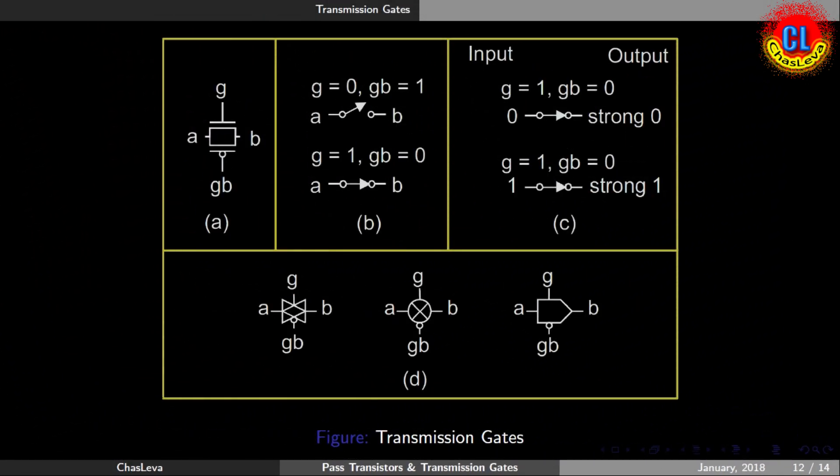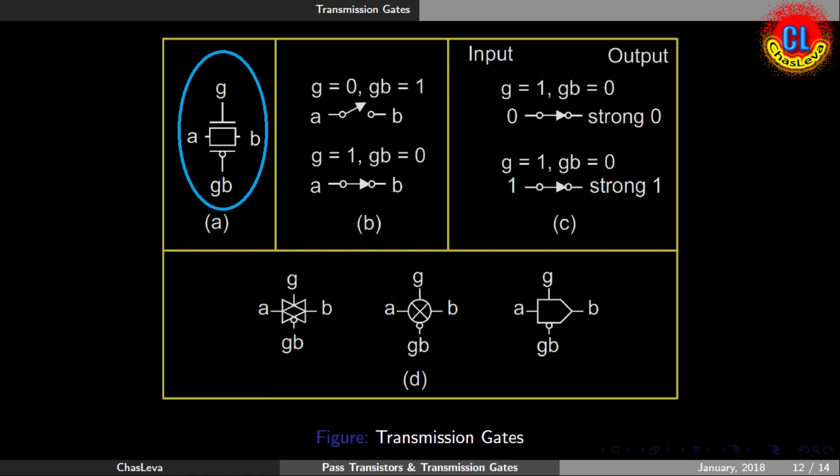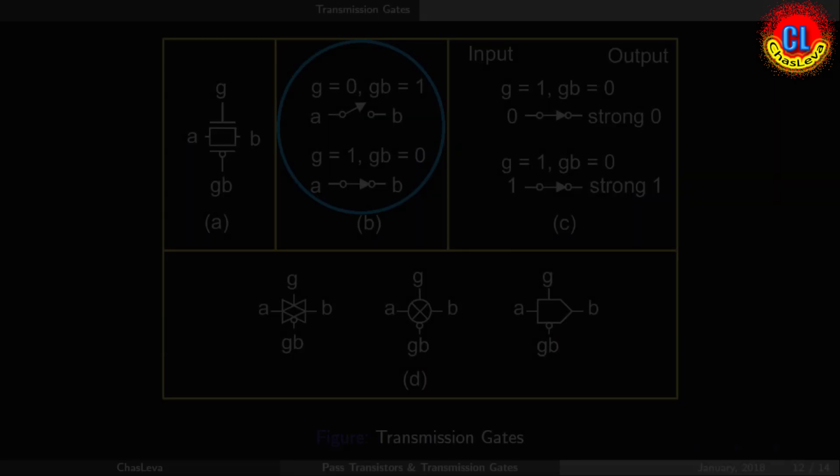Now summary. Combining both NMOS transistor and PMOS transistor, we can make transmission gate, which have one source, one drain and two gate terminals. The gate terminal of PMOS, that is GB, will be the complement of the gate terminal of NMOS, that is G.